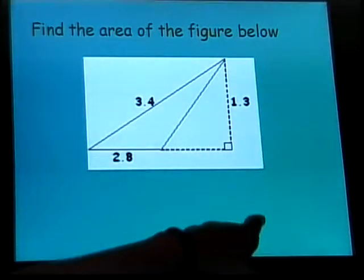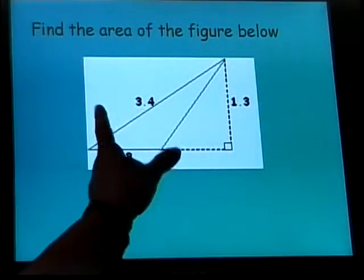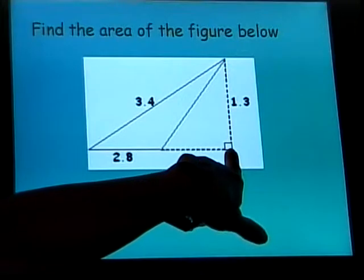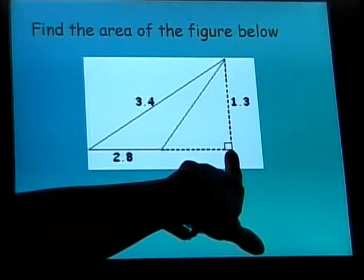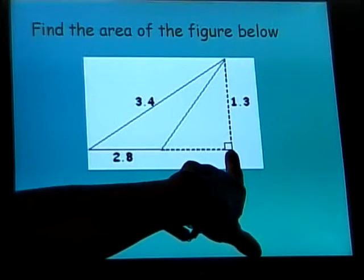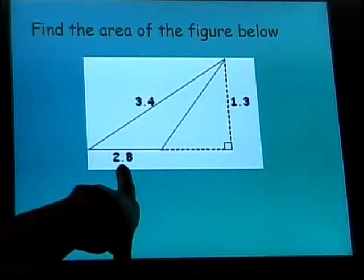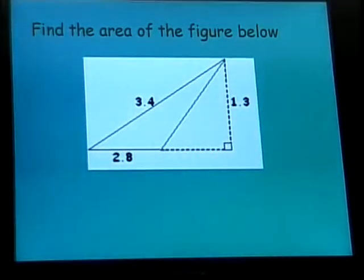So when I use my area formula, one half base times height, for this triangle, I'm going to use the base 2.8 because that's where my height is, that's the line where if it was continued, my height would be at a right angle to it, and then a height of 1.3. So I would just be calculating one half, 2.8 times 1.3.